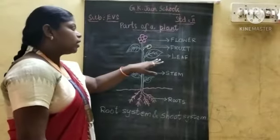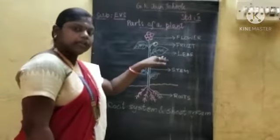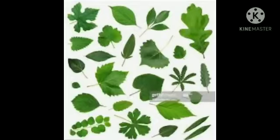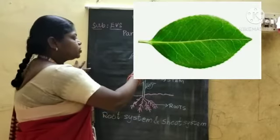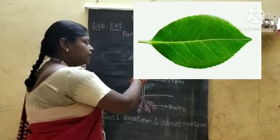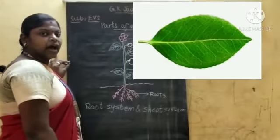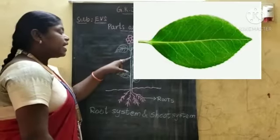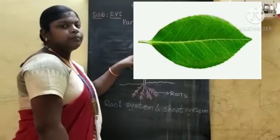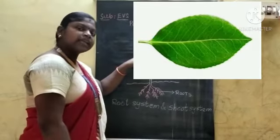Now we are going to see about the leaves. Leaves are the part which grow from the stem. Most of the leaves are green in color. They make food for the plant with the help of sunlight.